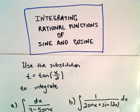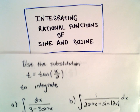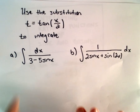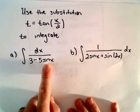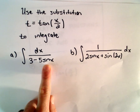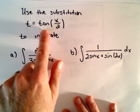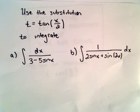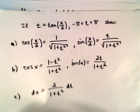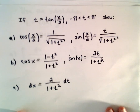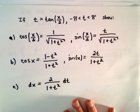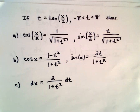Here I'm going to do an example of integrating a rational function of sine. I'm going to do part A — we're going to integrate dx over 3 minus 5 times sine x. I'm going to use the substitution t equals tangent of x over 2. As we've seen in a previous video, based on that substitution we can come up with a bunch of new formulas to use, and I'm going to immediately make use of these formulas to help us do this problem.